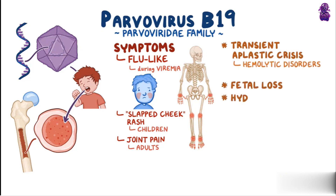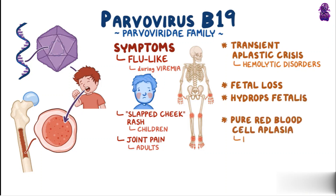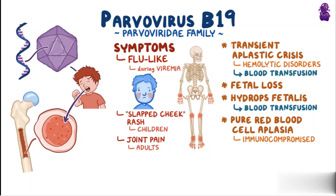It can also cause fetal loss and hydrops fetalis in pregnancy, and pure red blood cell aplasia in immunocompromised individuals. Treatment varies according to the symptoms, and can involve blood transfusion for transient aplastic crisis and hydrops fetalis, and intravenous immunoglobulin therapy for chronic infections.